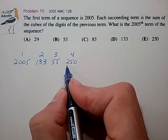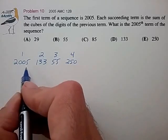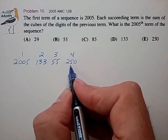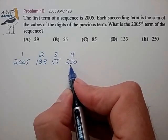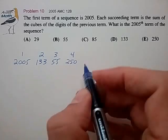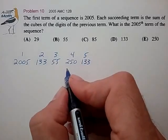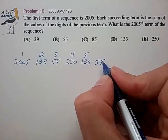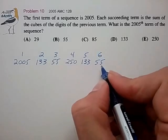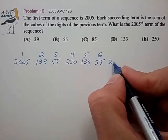And here we probably noticed that we have the same digits as our first term. So this will, by cubing the digits, yield the same term as the second term, 133. And at that point we probably noticed that this pattern is just going to keep repeating. So 133 yields 55, 55 again will yield 250.